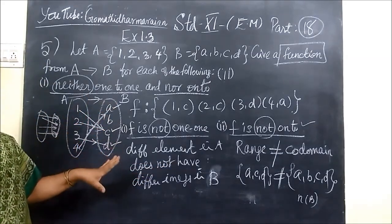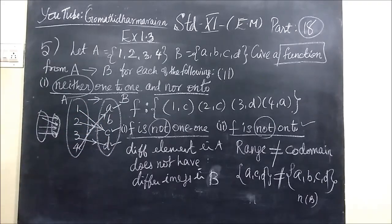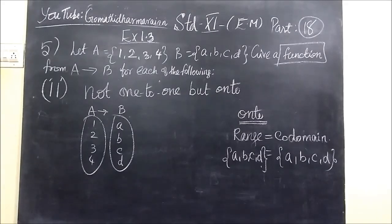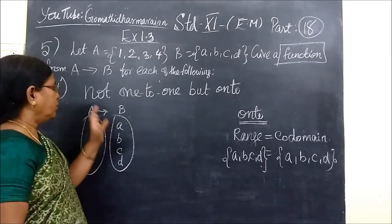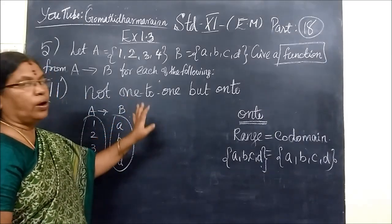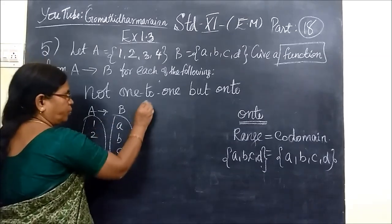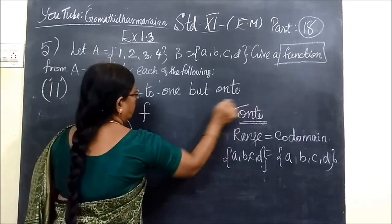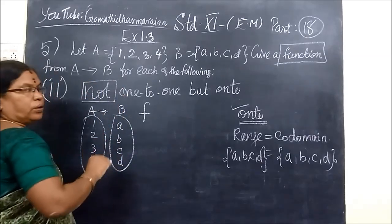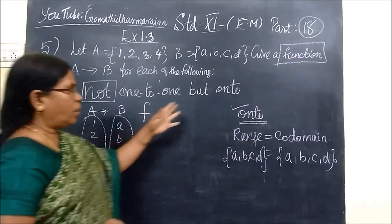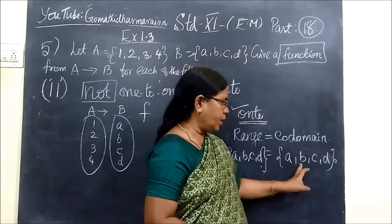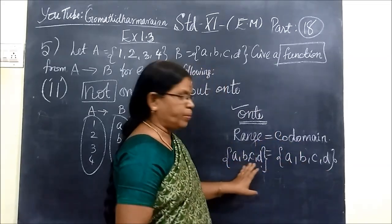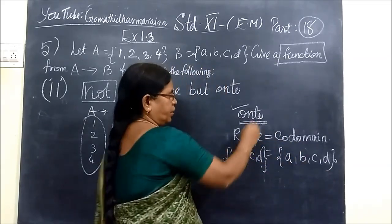You have been given 5 questions, and we do the 2nd question now. We have to construct such a function that is not one-one but onto. The function F should be onto but not one-one. Onto means range equals codomain, so codomain is {A, B, C, D} and range is {A, B, C, D} — that is an onto function.